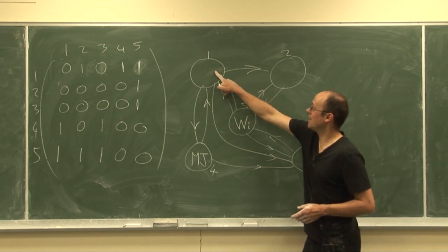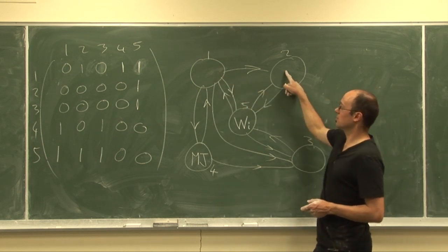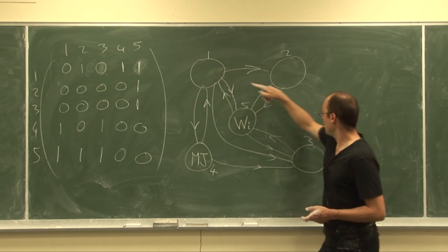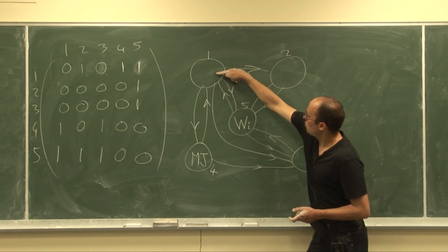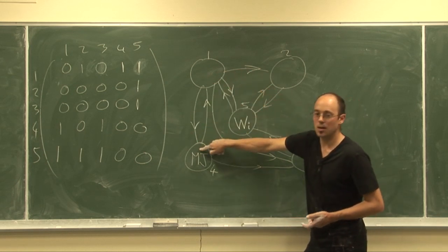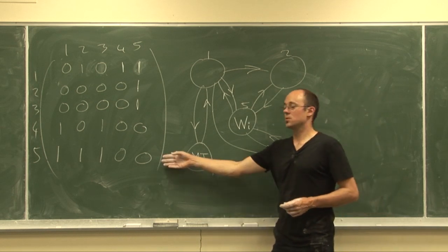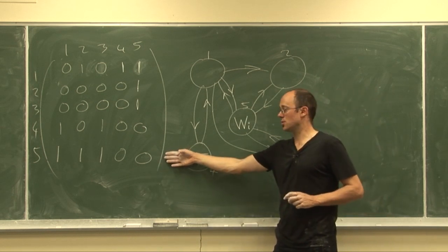So here there's supposed to be a link from webpage one to page two. You can click on it and go over to here. There's no link from one to three, but there is a link from one through to Wikipedia and from one through to my webpage. So all of this information is going to be recorded in what's called a matrix.